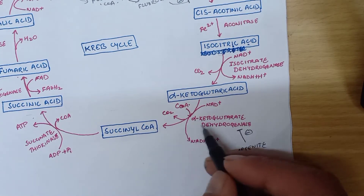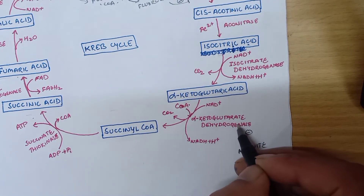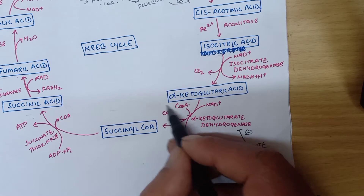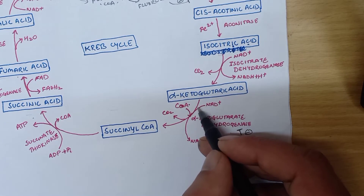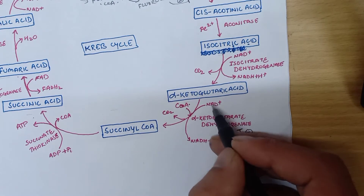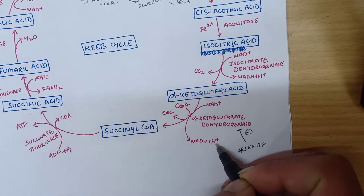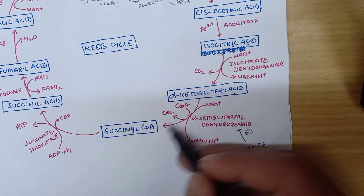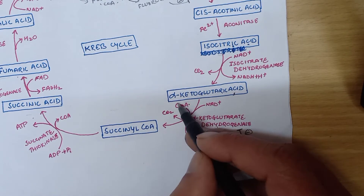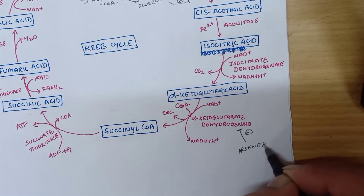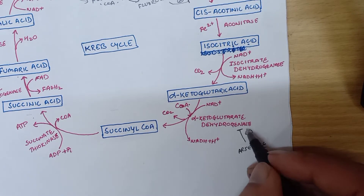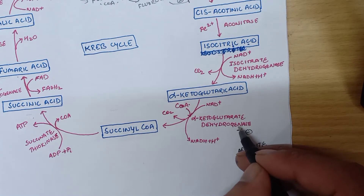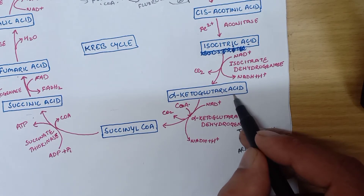Normally, alpha-ketoglutaric acid, which is a five-carbon compound, is converted into succinyl coenzyme A by alpha-ketoglutarate dehydrogenase via oxidative decarboxylation, where one molecule of carbon dioxide is given out. During the process, hydrogen is removed, picked up by NAD+ which gets converted into NADH and H+. So when this enzyme is inhibited by arsenite, there will be accumulation of alpha-ketoglutaric acid.